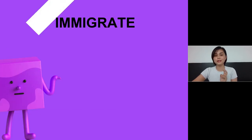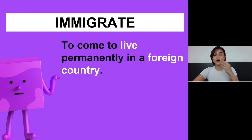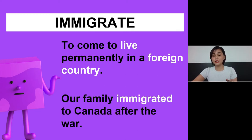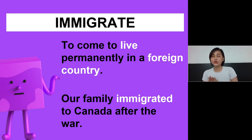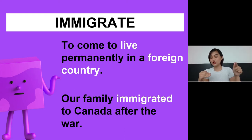Now let's jump to the second word, which is immigrate, spelled as I-M-M-I-G-R-A-T-E. This means to come live permanently in a foreign country. If I try to use this in a sentence, I can say: our family immigrated to Canada after the war. So if you come to think of it, emigrate and immigrate is like one whole process. First, you emigrate — it means you leave your country. And then you immigrate — it means you go and live in a foreign country.